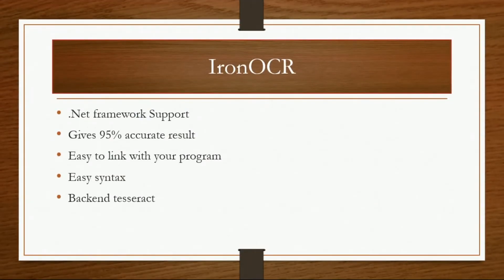Before starting the actual work, let's recall what Iron OCR is. Iron OCR is a built-in NuGet package that is used to extract text from pictures and PDF files, as well as to read barcodes. It gives 95% accurate results and its syntax is easy, and it is easy to link this library with our program. However, its speed is low, and it uses the Tesseract library at its backend, which is also used for the same purpose.